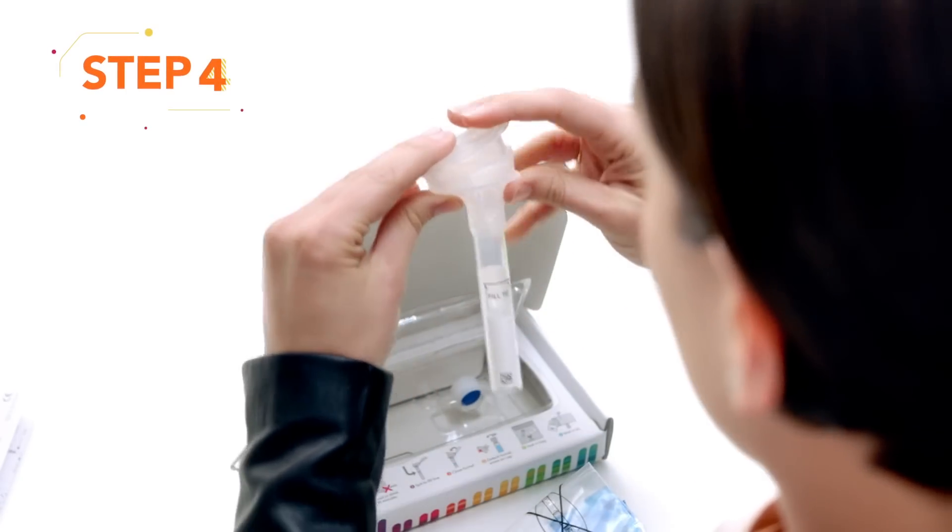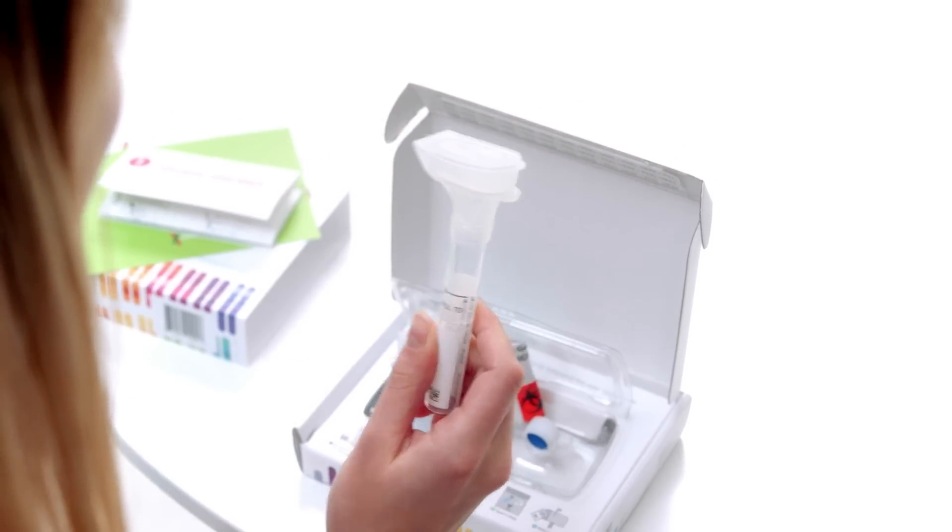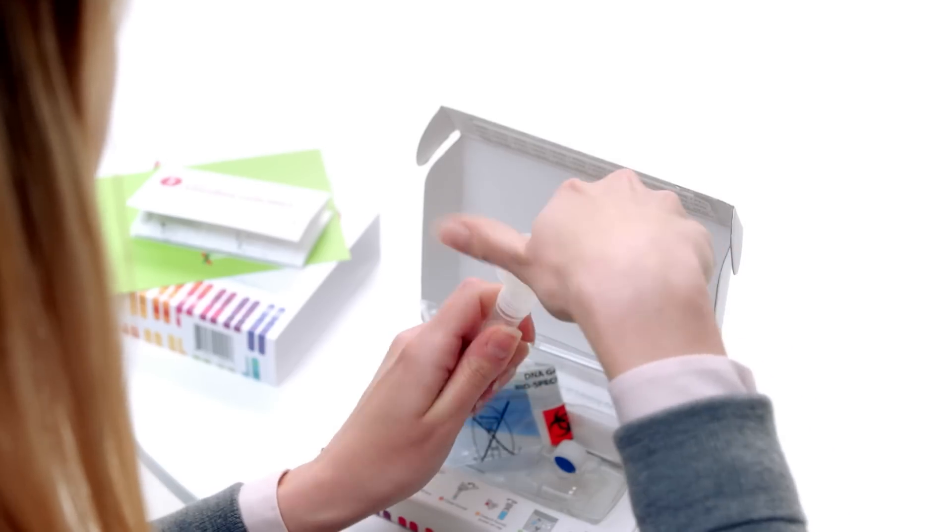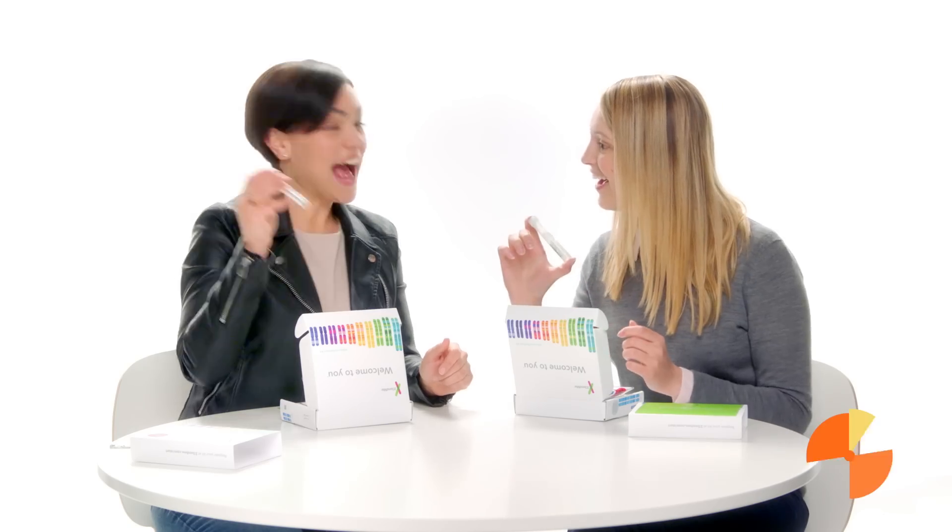After you've spit, securely snap the cap to the tube, which releases the DNA Stabilization Buffer Solution. Holding the tube upright, unscrew the funnel from the tube and discard. Use the small cap to close the tube tightly. Shake the cap tube for five seconds.